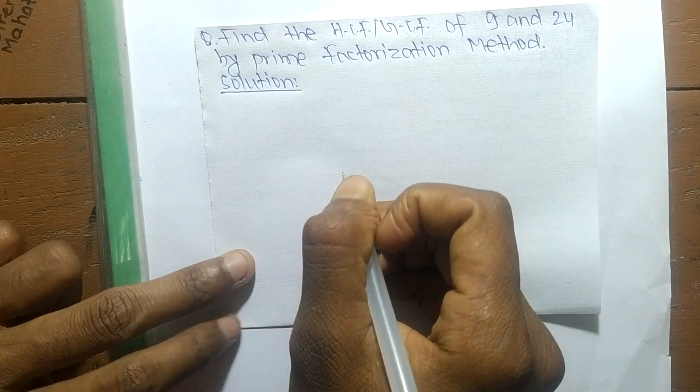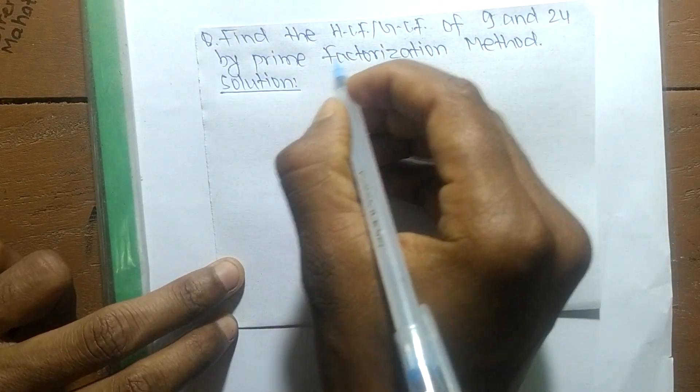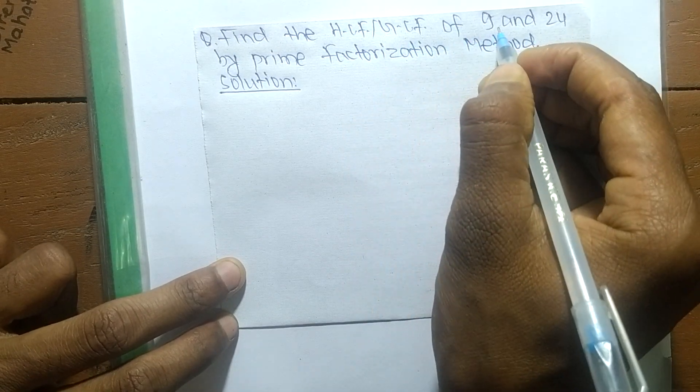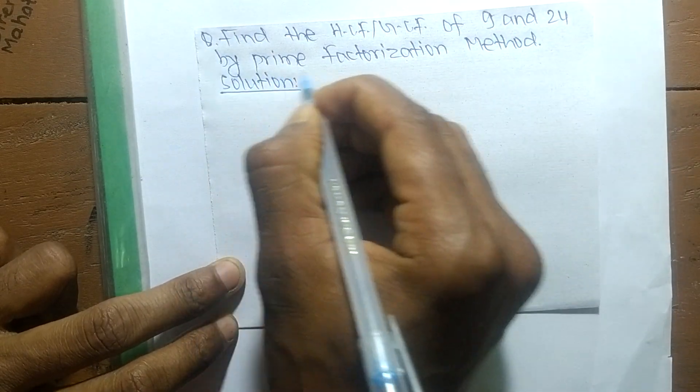So today in this video we shall learn to find the HCF or GCF of 9 and 24 by prime factorization method.